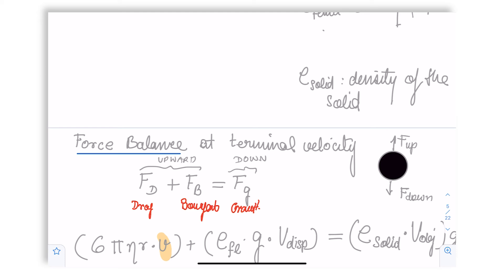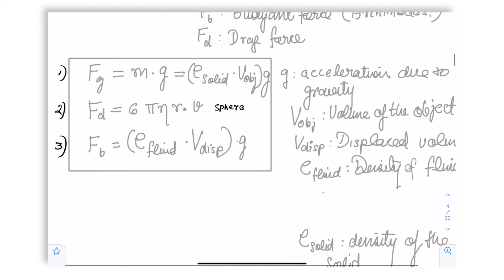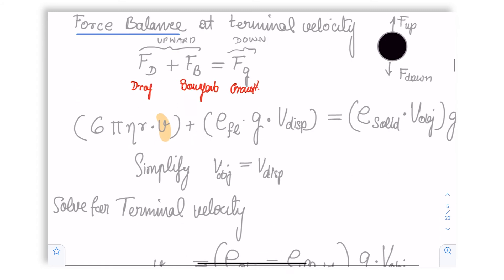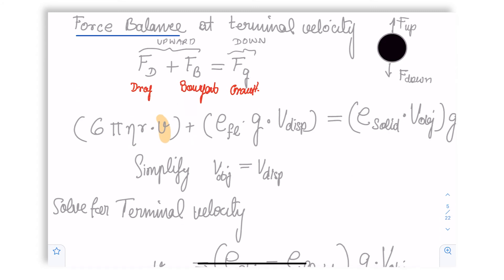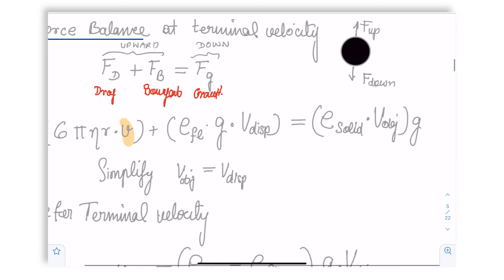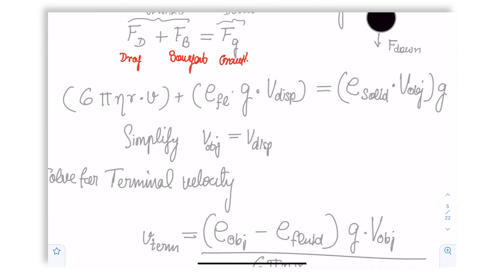Now, substituting equations 1, 2, 3 into this equation, we get 6 pi eta r v, the buoyant force being rho fluid times gravitational acceleration times v displaced, and the gravitational force being rho solid times v object times g. We simplify by assuming that the volume displaced corresponds to the volume of the object.